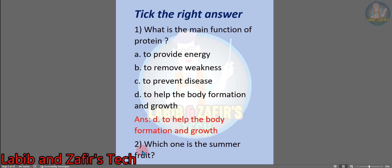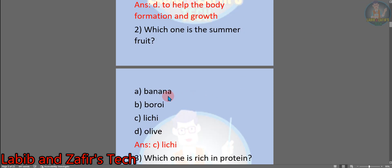Number 2: which one is the summer fruit? The options are: A, banana; B, boroy; C, lychee; D, olive. The answer will be C, lychee.